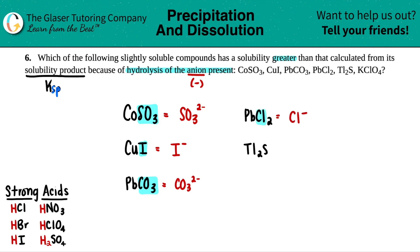Let's keep going. Tl2S. What is the anion for this one? Yep, it's just the S at the end, and that's a two minus charge. Remember, that's not the real importance, just getting the anion correct. The anion for KClO4 would be the ClO4, the perchlorate, so ClO4 minus.